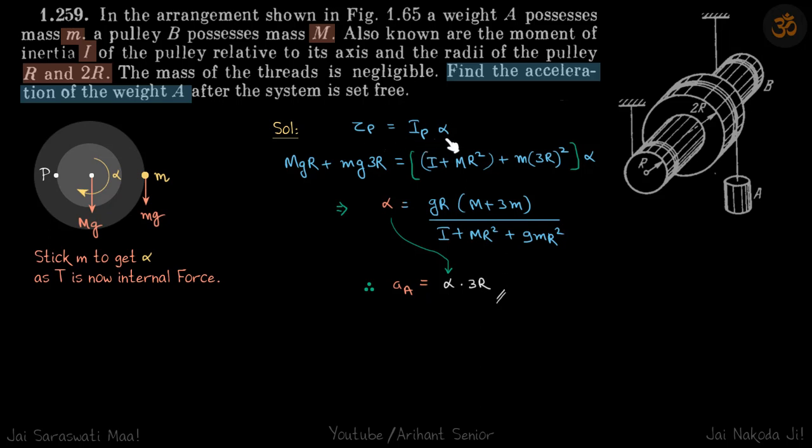So tau about P is equal to I about P times alpha. Tau about P will be due to both the mass of the spool and the mass of this weight A, so Mg times r plus mg times 3r. So this is r, this is r, this is r, so net distance of small mg is 3r, is equal to I alpha.